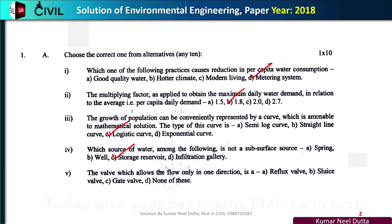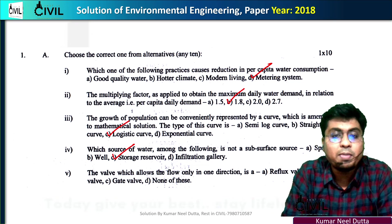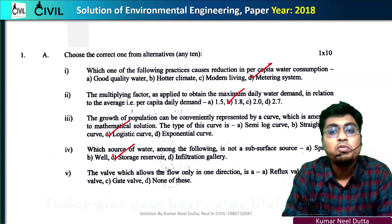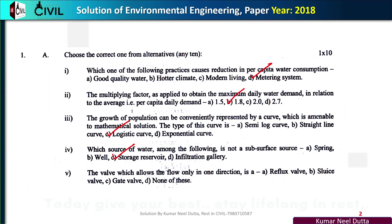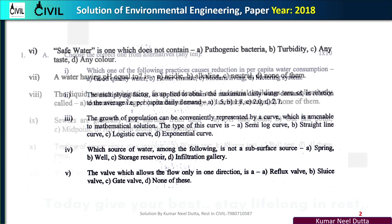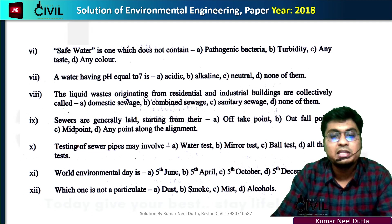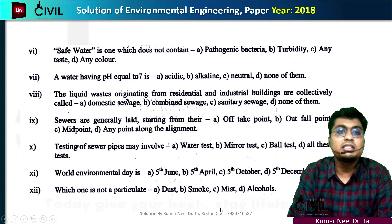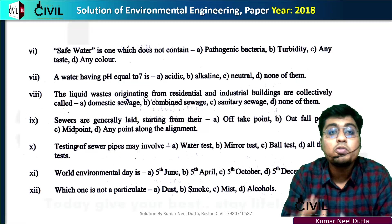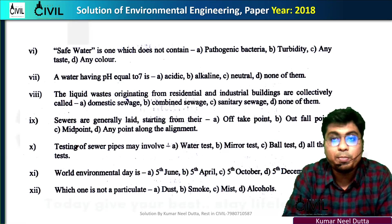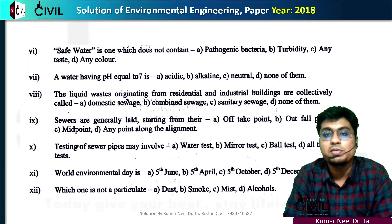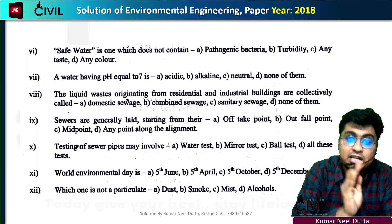Number 5: the valve which allows flow only in one direction — the active direction. Number 6: safe water is one which does not contain pathogenic bacteria.